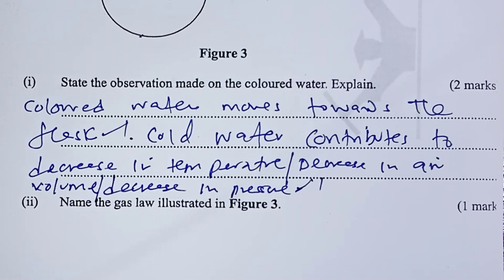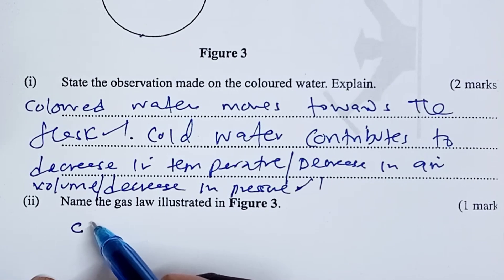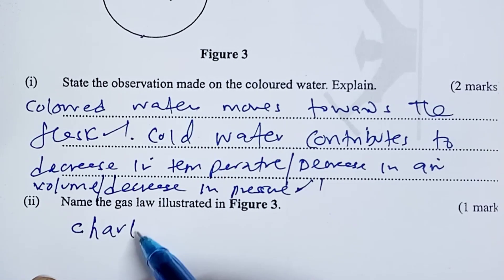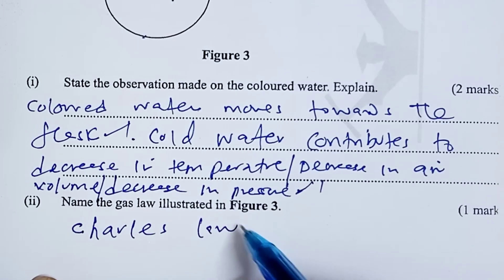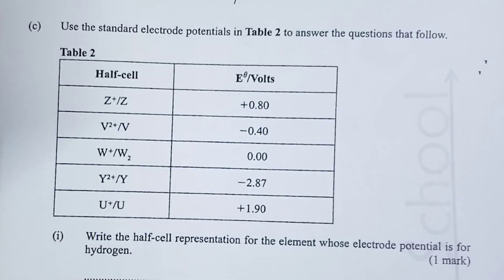The explanation would be that cold water contributes to decrease in temperature. A student had the option of saying that cold water contributes to decrease in air volume, or decrease in pressure. All these were allowed as explanations. The explanation would give the student another one mark, totaling to two for that section. We were asked to name the gas law illustrated in figure three. This is all about temperature and gas volume, and this is Charles' law for one mark.